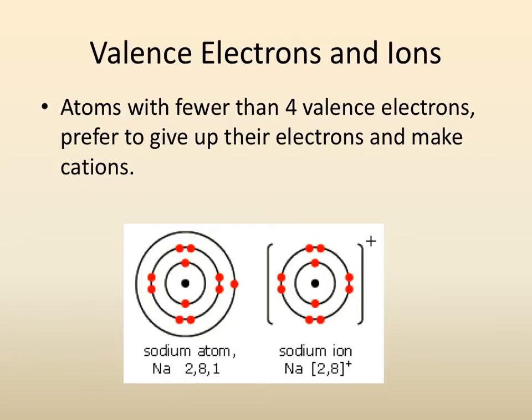Valence electrons and the number that the atom has relates to the ions that are formed. Generally speaking, if an atom has fewer than four valence electrons, it is more likely to give up those electrons to drop down, go in one more shell so that they have a full shell instead of picking up electrons. That's why all of the things in row one and two tended to make positive cations.